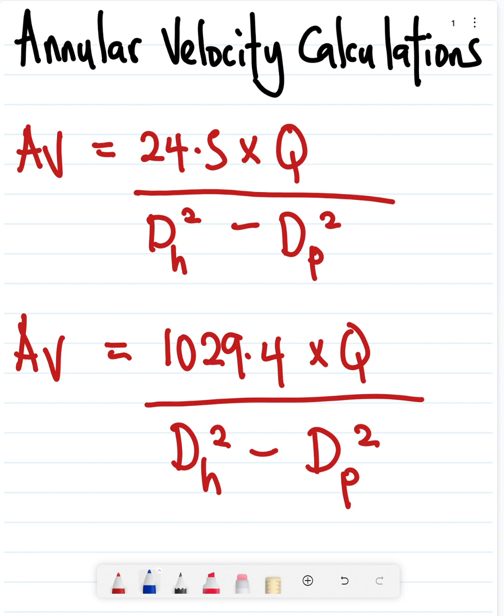Annular velocity is calculated using the first equation: AV equals 24.5 times Q, where Q is in gallons per minute, divided by the hole size squared minus the pipe size squared.